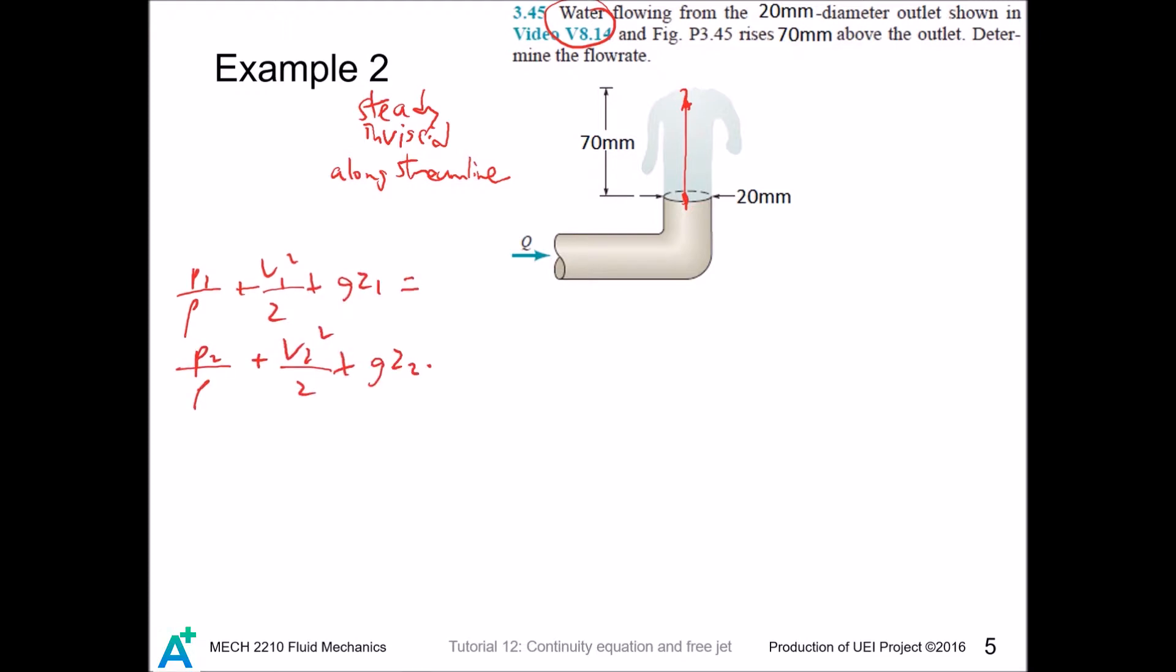We write down p1/ρ + v1²/2 + gz1 = p2/ρ + v2²/2 + gz2. Points 1 and 2 are both exposed to atmosphere so these two guys go out. Point 2 is the highest point so it cannot have any velocity, so we have v1 = √(2g(z2-z1)). We plug in the values; the difference in elevation is 70 millimeters.